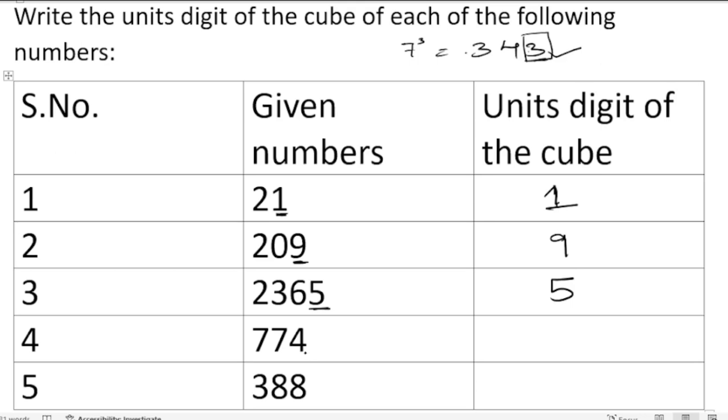The next one is 4. The square of 4 is 16, but if we do 16 into 4, that means 3 times, we will get 64. So the units digit will be 4. Next is 8.